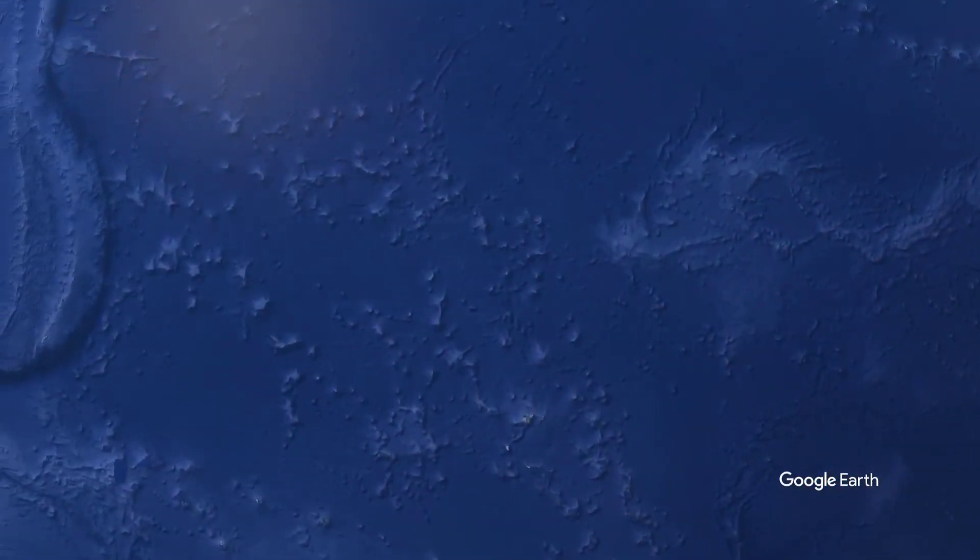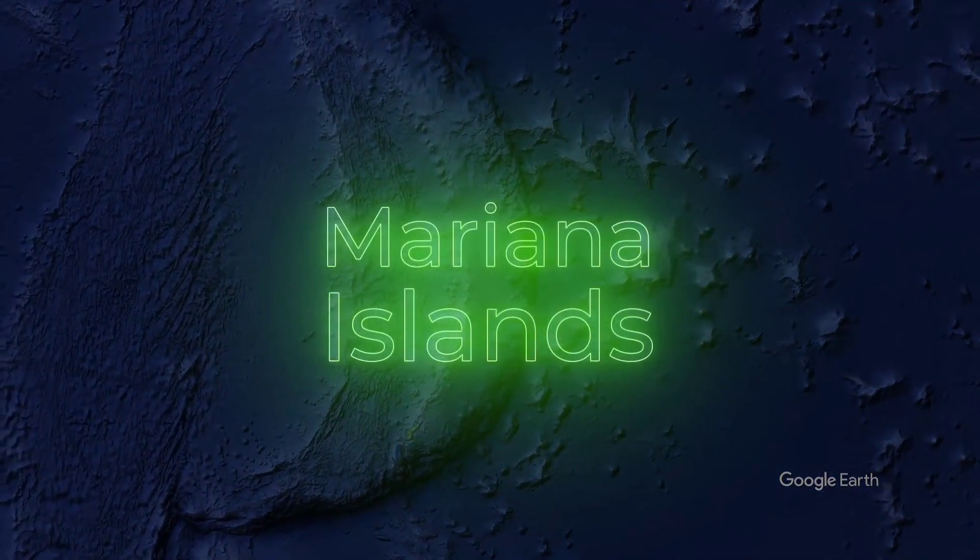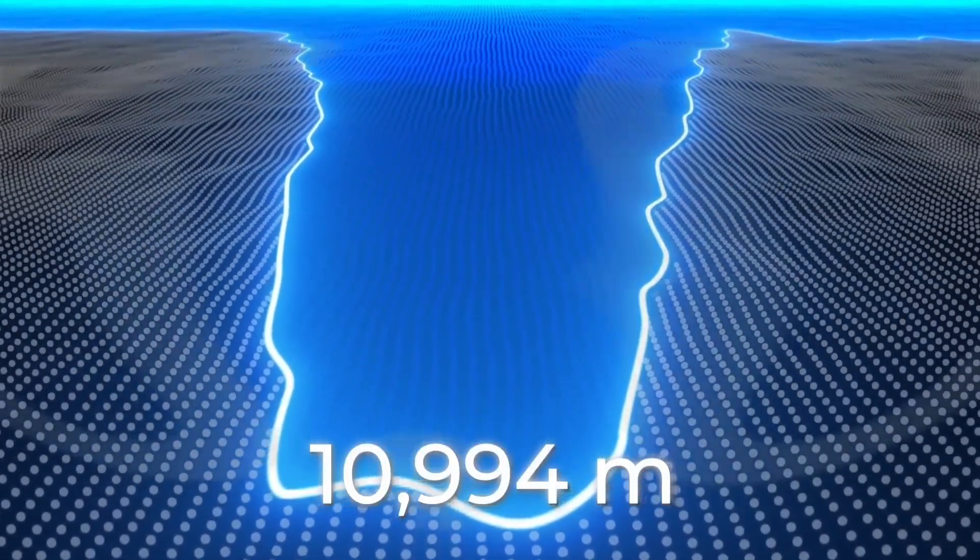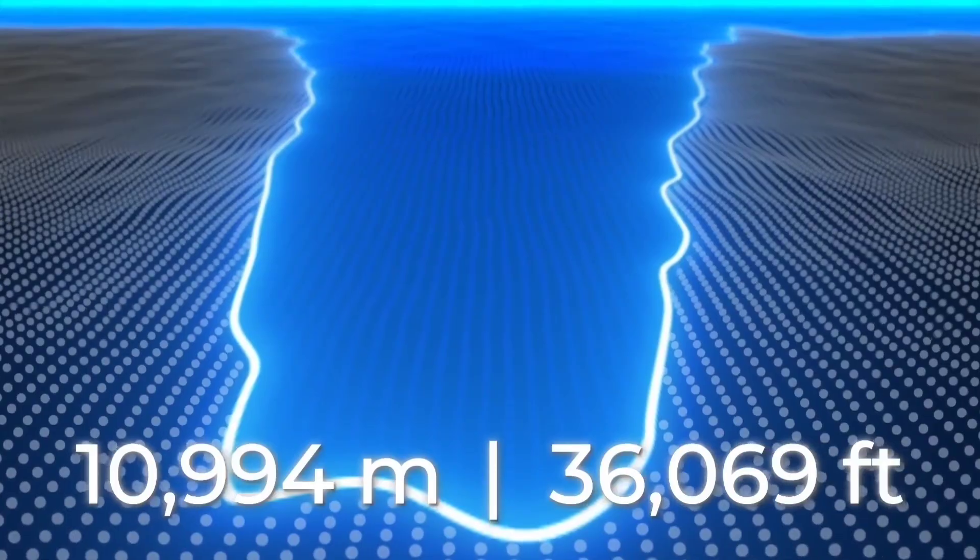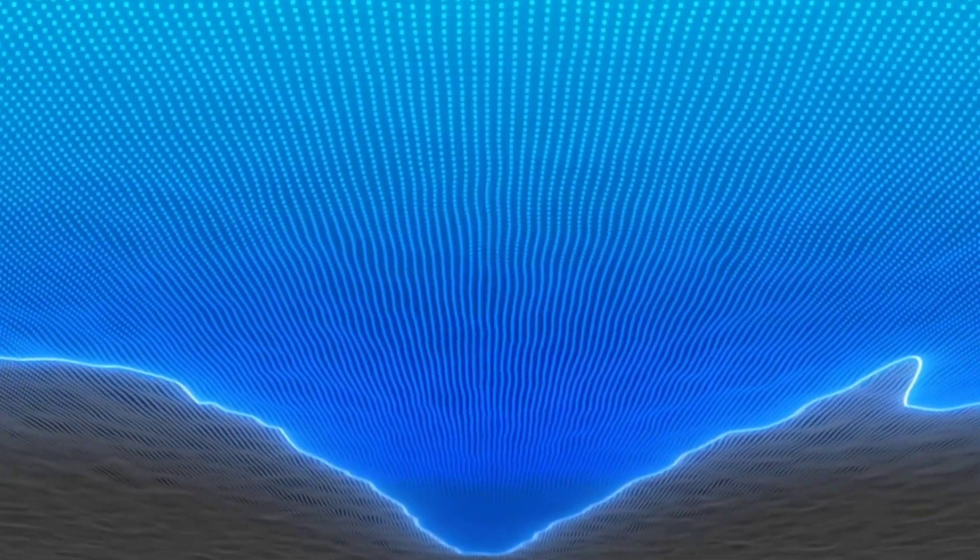To get to the Mariana Trench, you need to go to the western region of the Pacific Ocean, to the Mariana Islands. The deepest point of the Mariana Trench is 10,994 meters, or 36,069 feet. This is in the Challenger Deep. This depth isn't considered suitable for life.